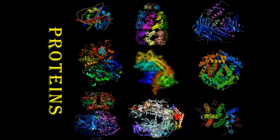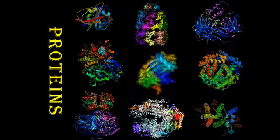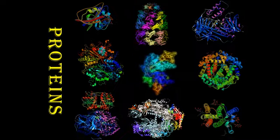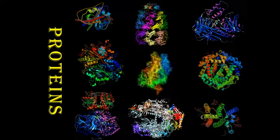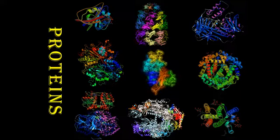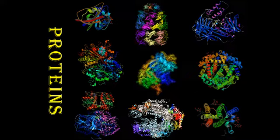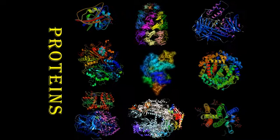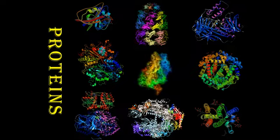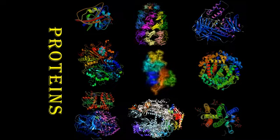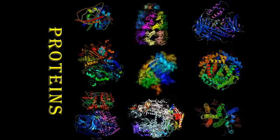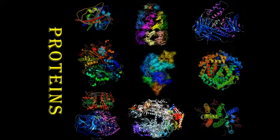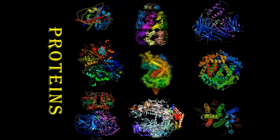You probably are used to thinking of protein as being one type of thing, but in fact you are made of hundreds of thousands, if not millions, of different types of proteins. We are constantly discovering new ones and new variations, and the number of different variations of types of proteins is virtually infinite. There is no limit to the variations of different types of proteins.